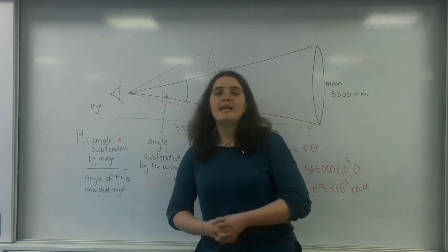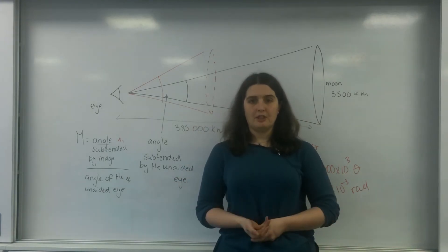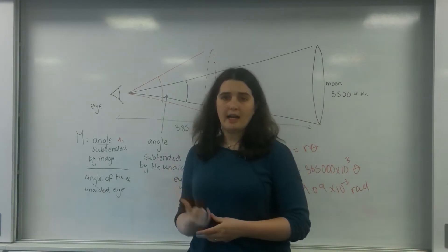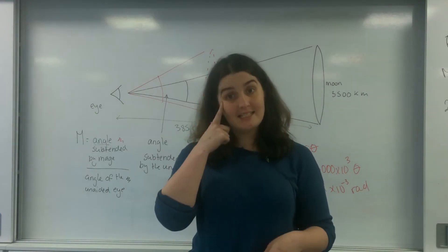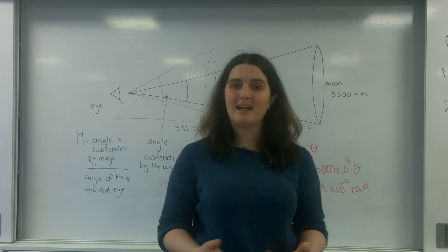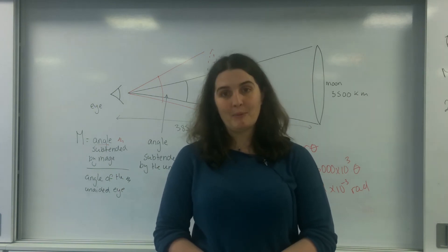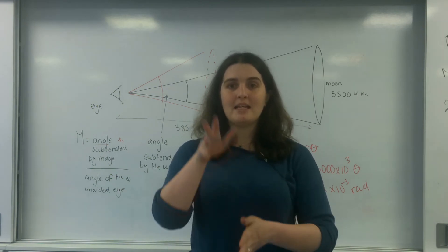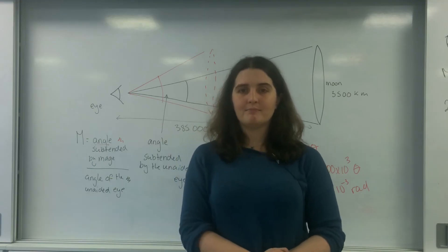So this here is angular magnification. You can use arc length to work out what it would be with the unaided eye, and then use the magnification formula to find out how much bigger it would look in a telescope. So that there is angular magnification. Alright, see you next time.